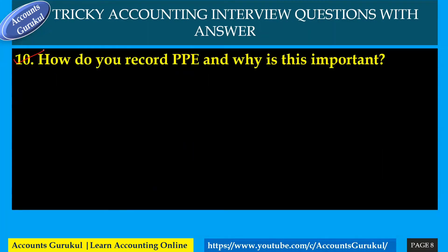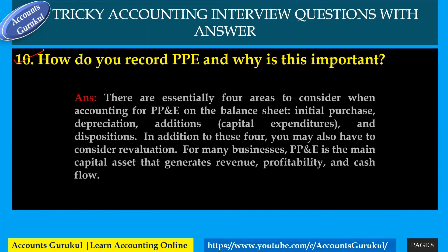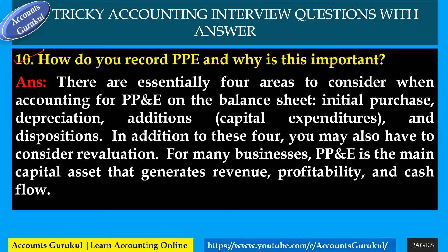How do you record PP&E and why is this important? There are essentially four areas to consider when accounting for PP&E on the balance sheet: initial purchase, depreciation, additions or capital expenditures, and dispositions. You may also need to consider revaluation. For many businesses, PP&E is the main capital asset and generates revenue, profitability, and cash flow.